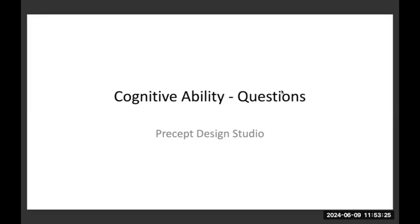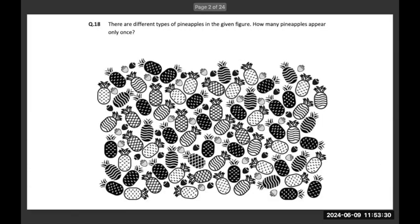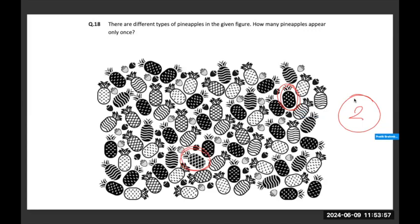Good morning all, we'll begin today's session now. The first question: there are different types of pineapples in the given figure. What you have to find is how many pineapples appear only once. The pineapples which appear only once are this one, this one, and this one here — these two are the ones appearing only once. Hence the correct answer is two.